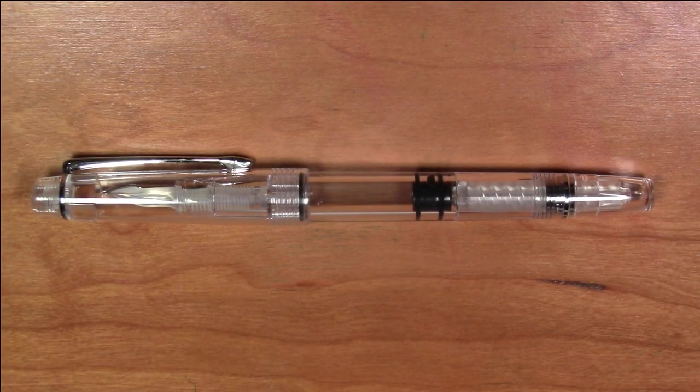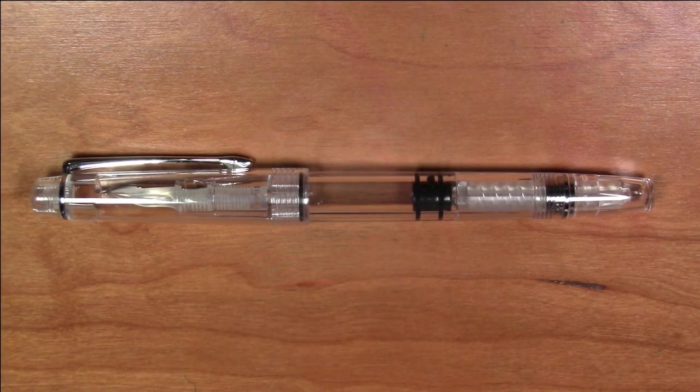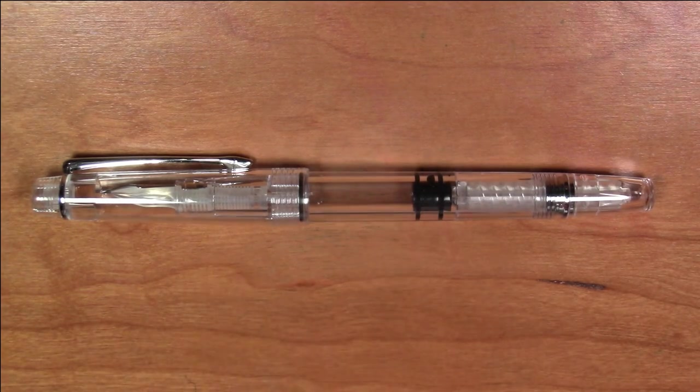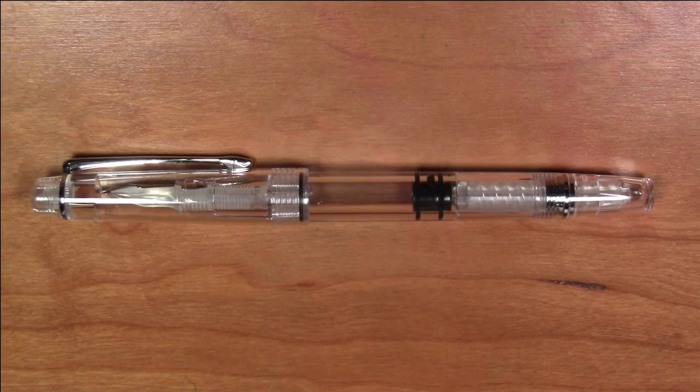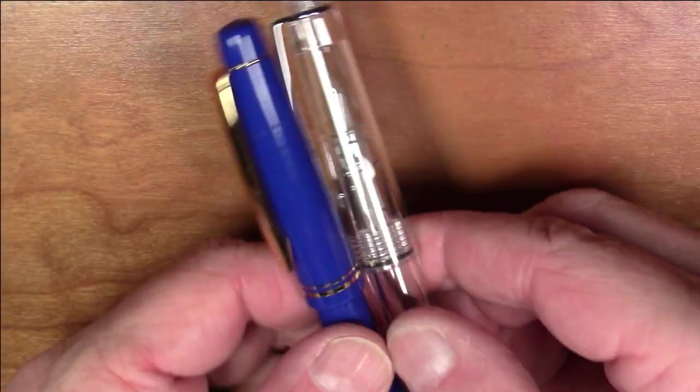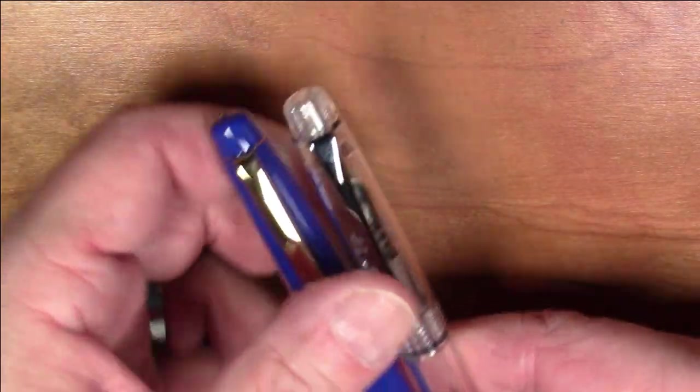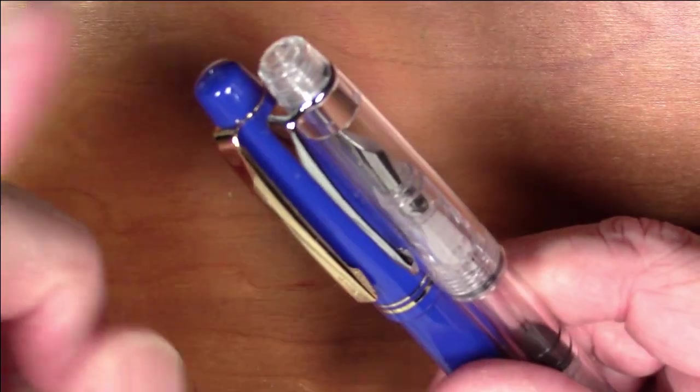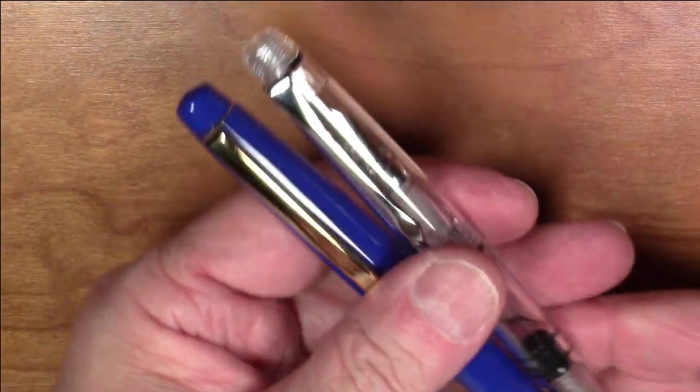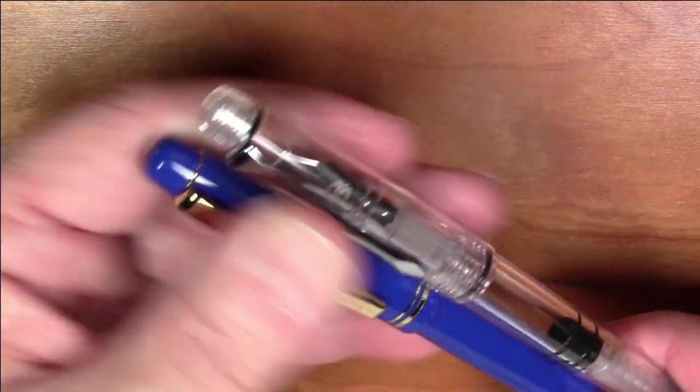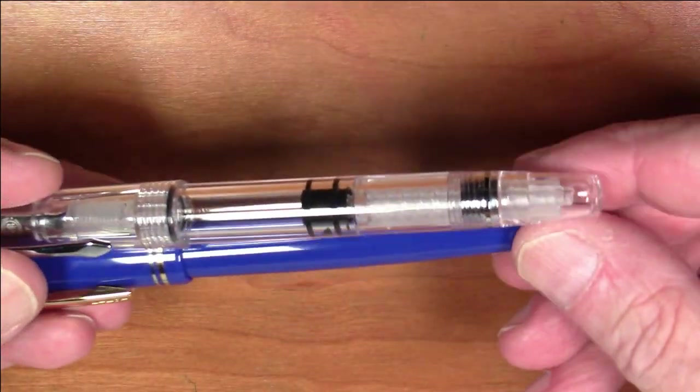Greetings viewers, we have a very nice, very inexpensive pen here today from PenBBS. This is the model 494, a four dollar piston filling pen from PenBBS. It is styled very much like a Pilot 78G. The clip is different, it is a little bit longer, but as we'll see when we get to the business end of it, it is very much like a Pilot 78G. This general styling on the caps is pretty much the same.